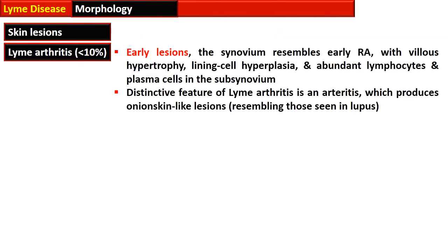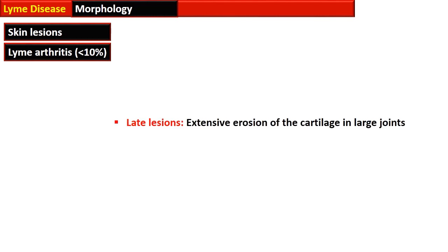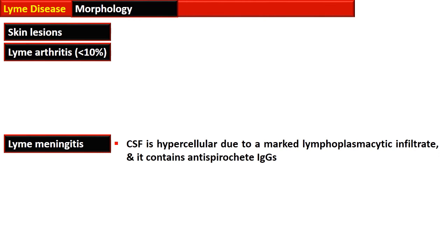Skin lesions of Lyme disease are characterized by edema and lymphocytic plasma cell infiltrate. Lyme arthritis, seen in less than 10% of Lyme disease cases, shows early synovial lesions resembling rheumatoid arthritis with villous hypertrophy, cellular hyperplasia, and abundant lymphocytes and plasma cells. A distinctive feature is arteritis producing onion skin-like lesions within the arterial wall. Late lesions show extensive erosion of cartilage in large joints. Lyme meningitis exhibits hypercellular CSF due to marked lymphoplasmacytic infiltrate containing immunoglobulins against the spirochetes.